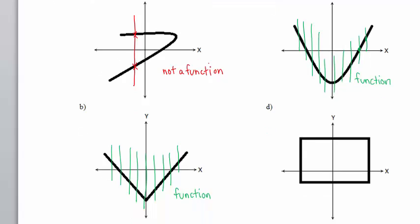In Part D, all I have to do is find one vertical line that intersects the graph in more than one point. That I have done. In Part D, we conclude immediately that this graph is not a function. Sometimes we say this graph has failed the vertical line test.